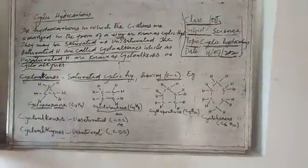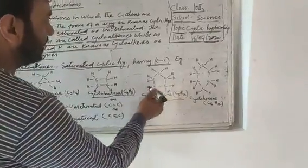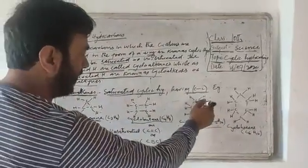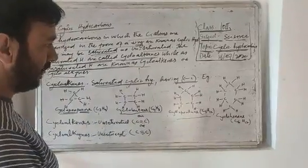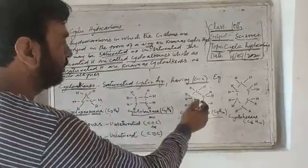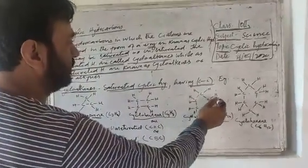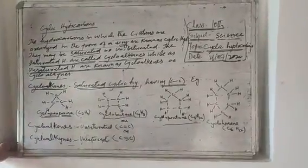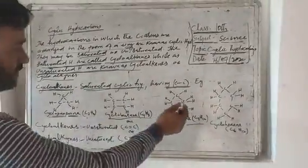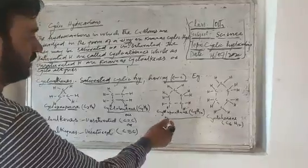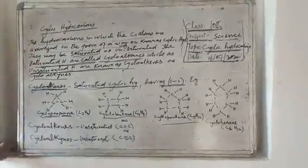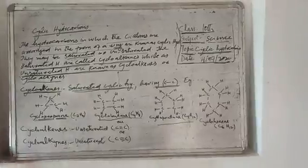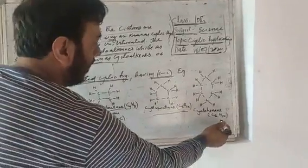There is one more example: C5H10. There are five carbon atoms linked with one another forming a ring structure, and each carbon atom is linked with two hydrogen atoms by single bonds. This cyclic structure is known as cyclopentane C5H10. And there is one more example: cyclohexane.